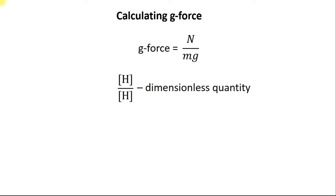However, the unit of g is often used. 1g is the acceleration due to gravity at the earth's surface. It equals 9.8 meters per second squared. So let's consider the examples.